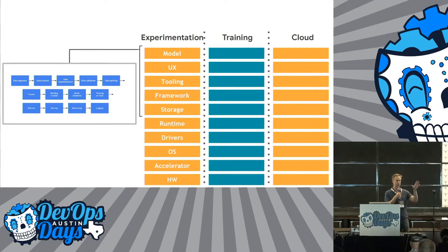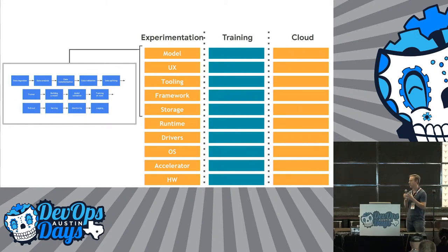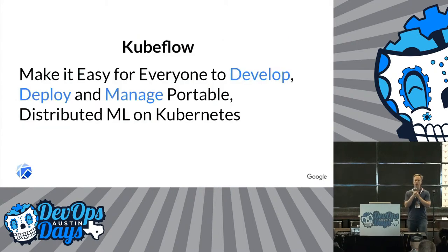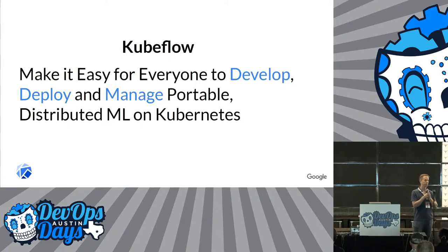So all those steps that I just started to touch on, you have to think about it. You also have to apply it to the right architecture. You have to make sure in a team environment you're using the same package dependencies, things like if you want to use GPUs, you're leveraging those consistently. So Kubeflow is aimed at making it easy to deploy, develop, manage portable and distributed ML on Kubernetes.